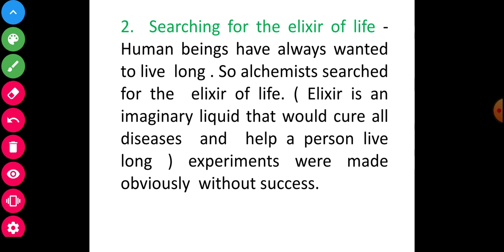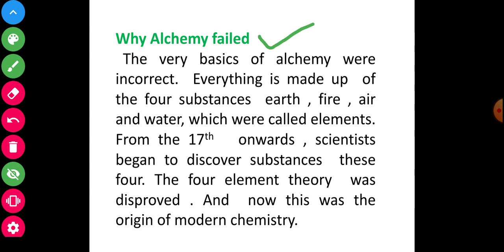Second: searching for elixir of life. Human beings have always wanted to live long, so alchemists searched for the elixir of life. Experiments were made, but without success. Why? Why did alchemists fail? The very basis of alchemy was incorrect. Everything is made of four substances: earth, fire, air, and water, which were called elements. From the 17th century onward, scientists began to discover substances. The four elements theory was disproved, and this was the origin of modern science.